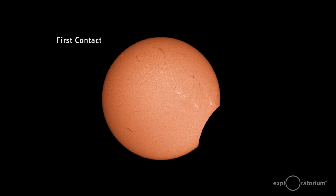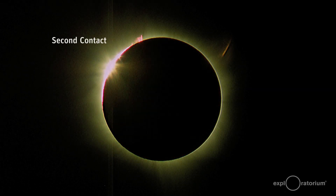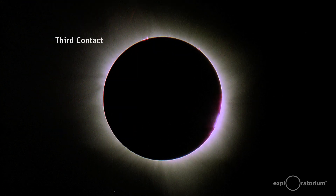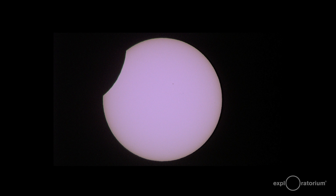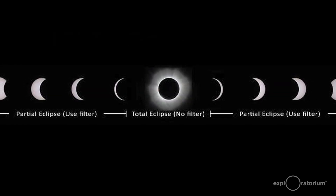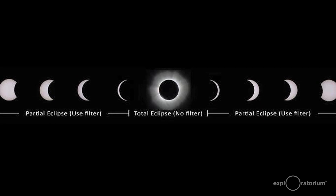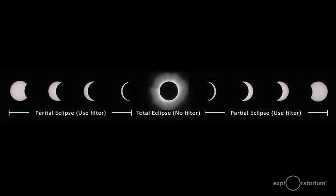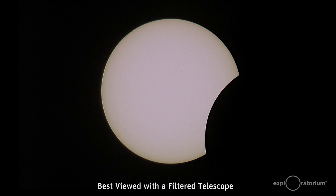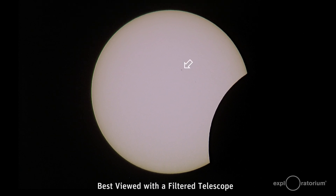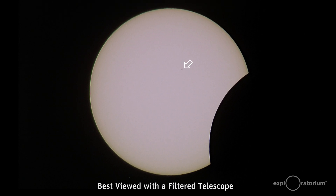During a total solar eclipse, there are various phases in which you can do some special things. When the moon is actually only partially covering the disk of the sun, you will see certain features on the surface of the sun, particularly sunspots. The sunspot will appear as a dark spot on the sun. It is actually an area of cooler temperature, about 1,500 degrees cooler than the surface of the sun, which is about 5,700 degrees Kelvin.